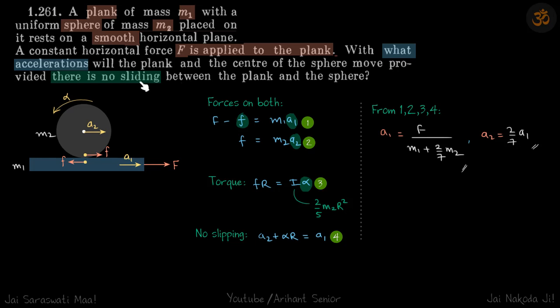Friction is sufficient, so the interaction force between the sphere and the plank is frictional force. Now, what will be the direction of friction? You can just imagine that if there were no friction and if you pull this plank towards the right, then relatively the sphere will move towards the left.